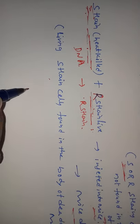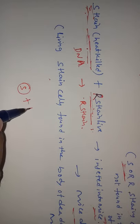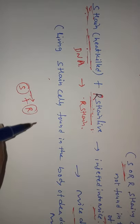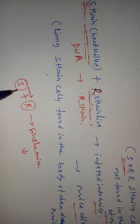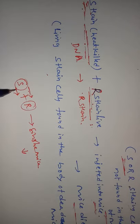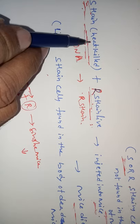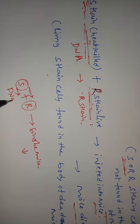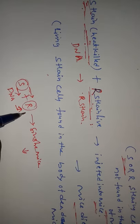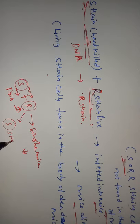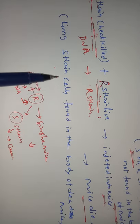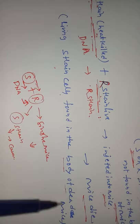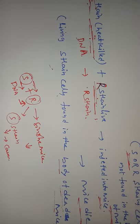When the heat-killed S-strains plus live R-strains were both injected into a single mouse, even though the S-strains were heat-killed, their DNA was not damaged — it was still present. The DNA from S-strains was transformed into the R-strains. The R-strains then converted into S-strains, which are responsible for causing the disease. Living S-strain cells were found in the body of the dead mouse, confirming this transformation.